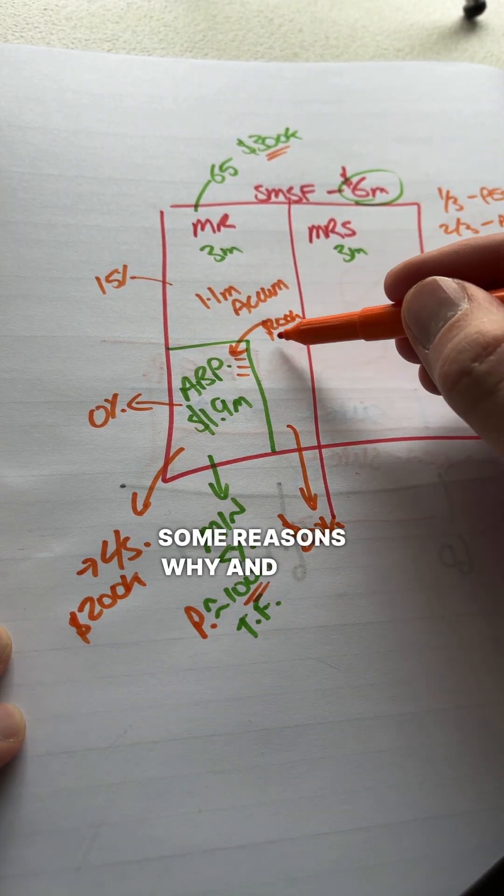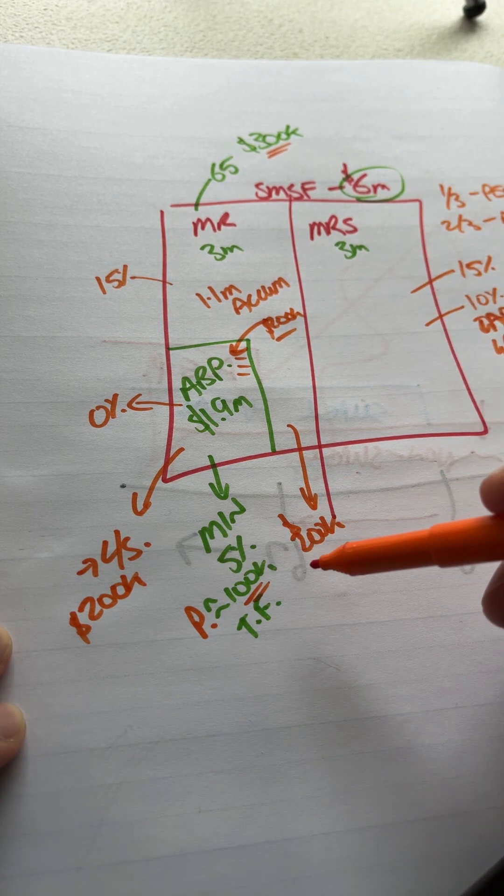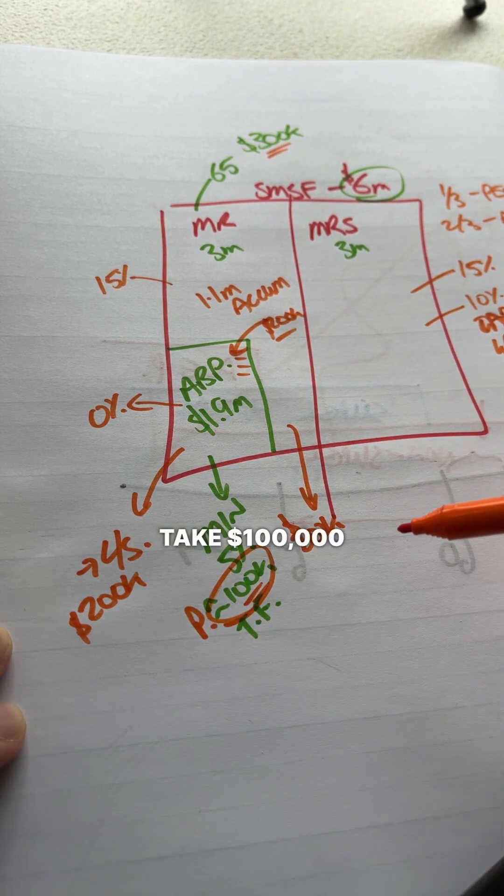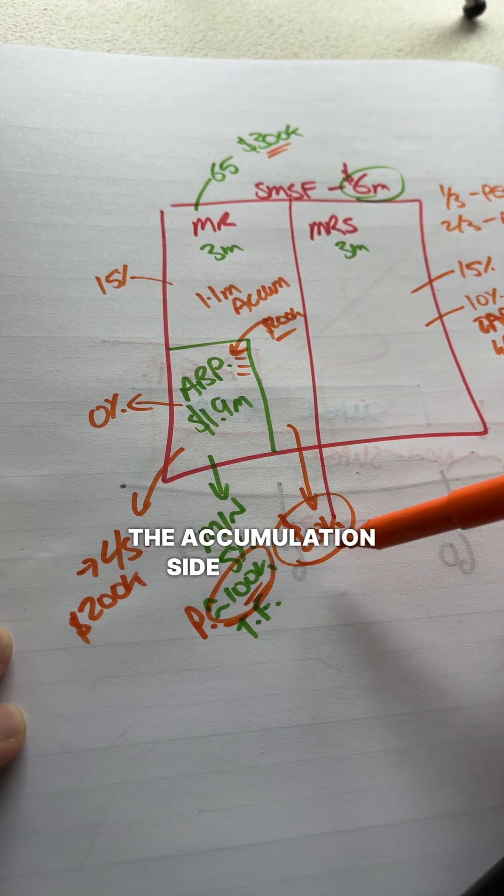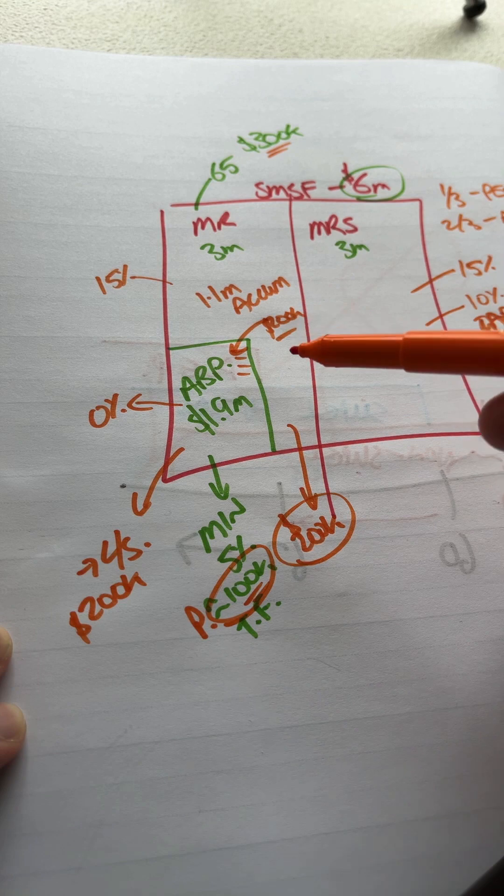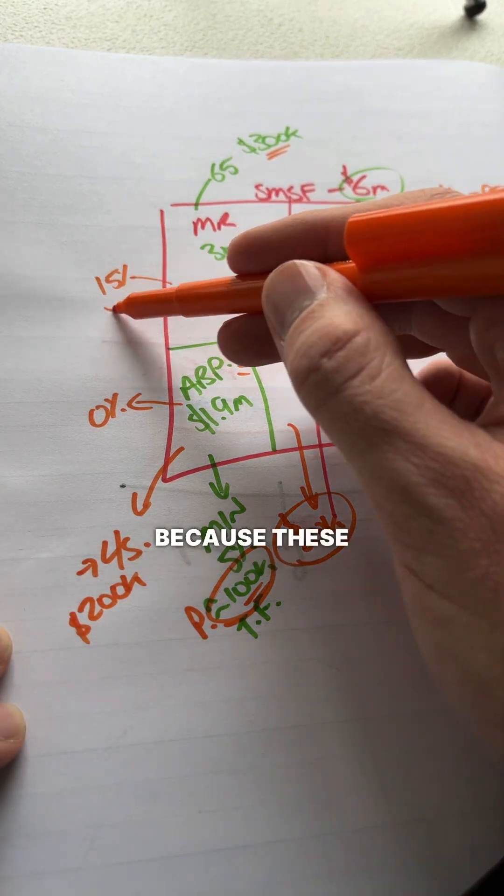There's some reasons why and why you wouldn't do that. In this particular client example, the best way is gonna be take $100,000 minimum pension payment and $200,000 from the accumulation side because we want to run that down. Where you've got money sitting in accumulation, it's generally better to take it from there because these earnings are taxed.